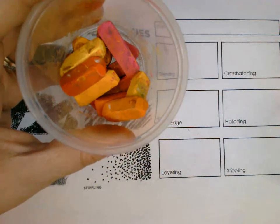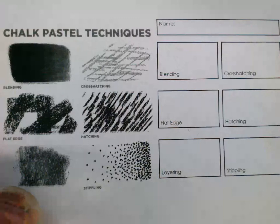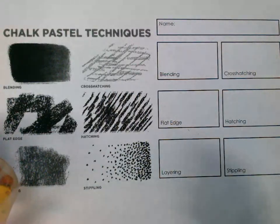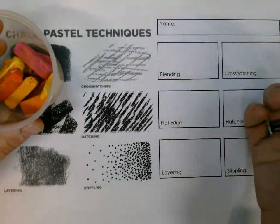So we're going to try these six techniques. The first rule is that we only use one at a time. And the first one is blending. Blending is my favorite. Please put your name on your paper and then let's try to do these techniques.